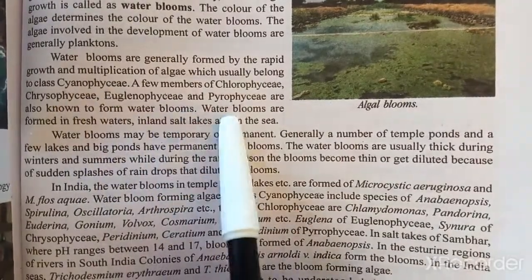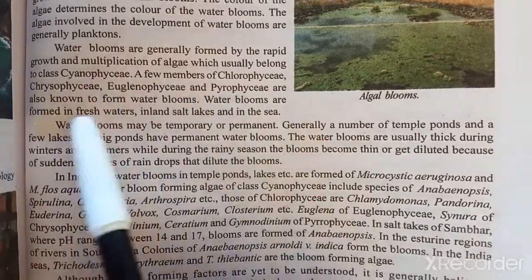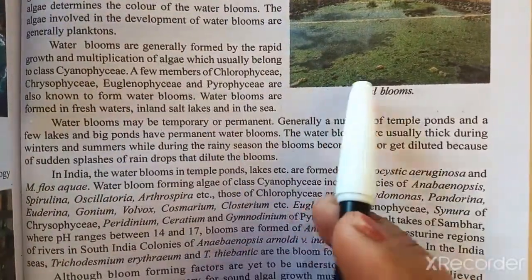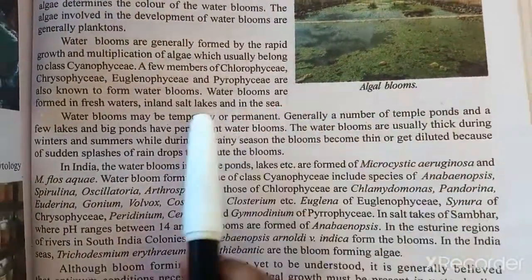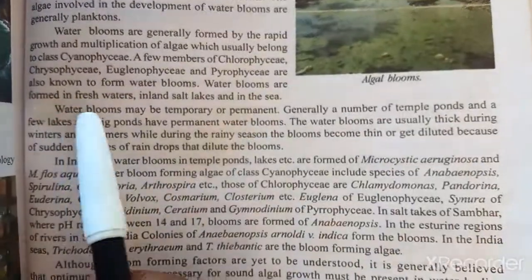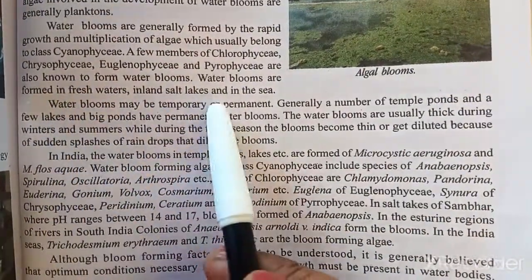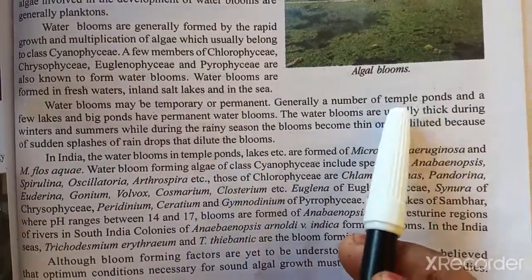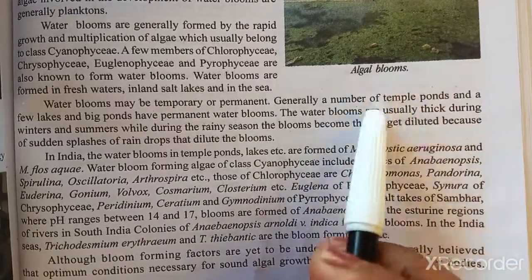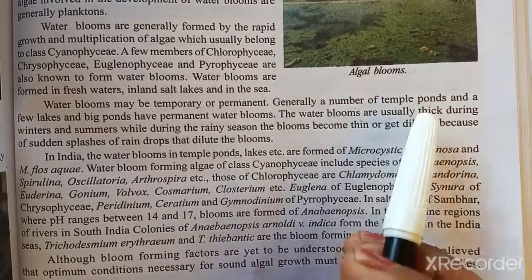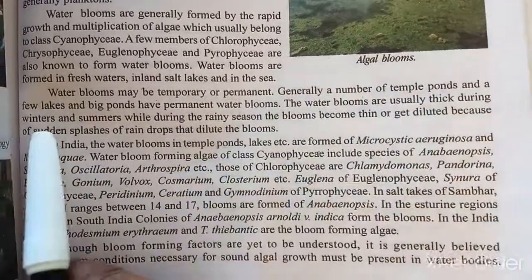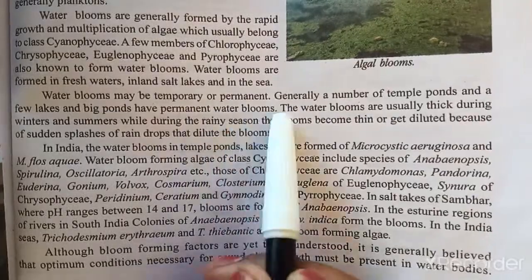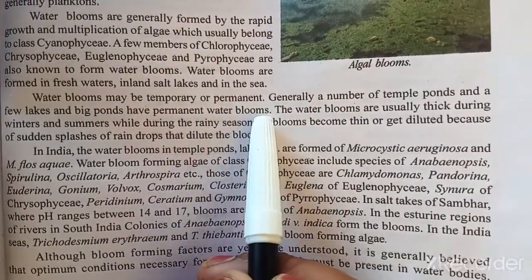When water bloom forms in fresh water it is known as a freshwater algal bloom, while in salt water or marine water it is simply known as an algal bloom. Algal blooms can be temporary or permanent, and we find them in temporary ponds, large water bodies, and permanent water sources.